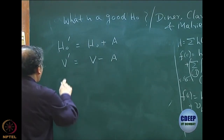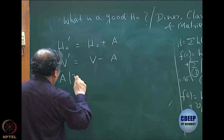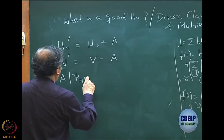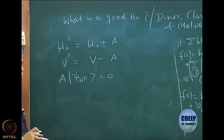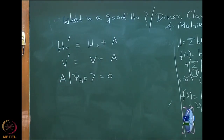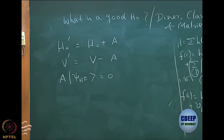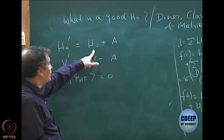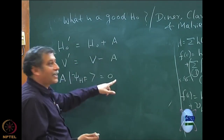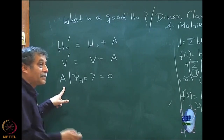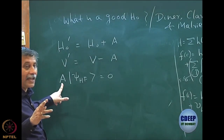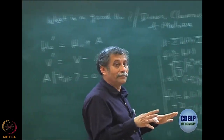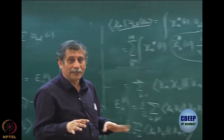I suggest putting this operator A such that A acting on Psi Hartree-Fock is zero. There are lots of ways to do that. If I do this, nothing changes, because when I compute E00, A is zero since A acting on Psi Hartree-Fock is zero. This does not mean A is a null operator — I am only saying that the action of A on Psi Hartree-Fock is zero.